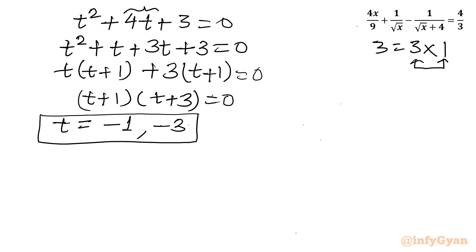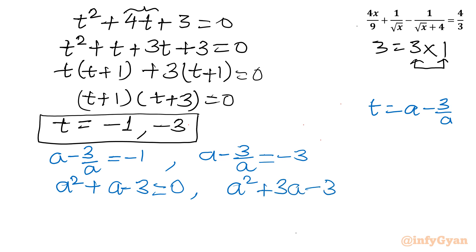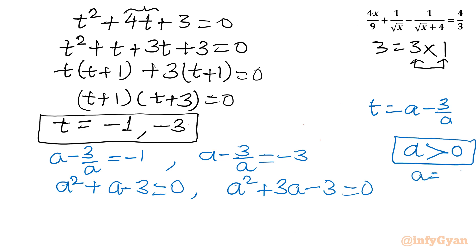Recalling that t equals a minus 3 over a, we back-substitute. For t equal to negative 1: a minus 3 over a equals negative 1, giving the quadratic a squared plus a minus 3 equal to 0. For t equal to negative 3: a minus 3 over a equals negative 3, giving a squared plus 3a minus 3 equal to 0. Remember, a must be positive since a equals square root x.